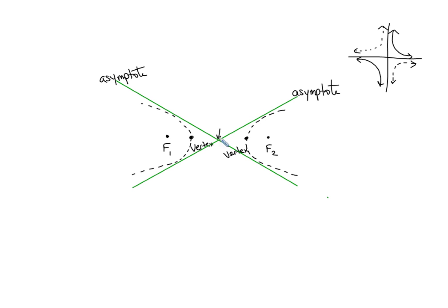Where the two asymptotes cross each other — right now at the origin, but not always — that will be the center of the hyperbola. Hyperbolas have centers just like circles and ellipses. Just like circles and ellipses, the center is not actually on the curve — the graph doesn't touch the center. Notice that the two branches of the hyperbola curve around their foci. Conic sections always curve around their foci.